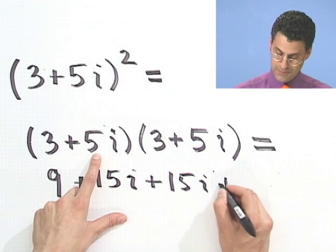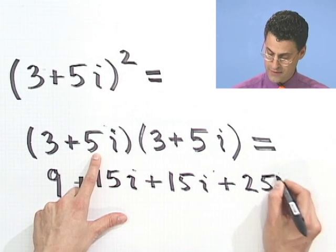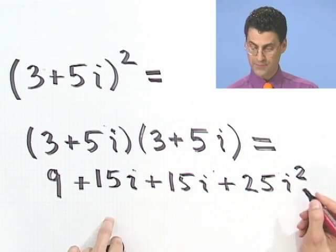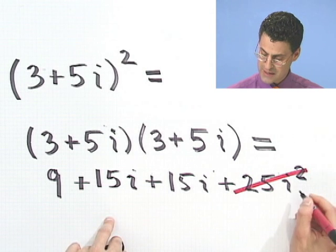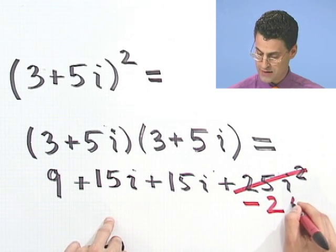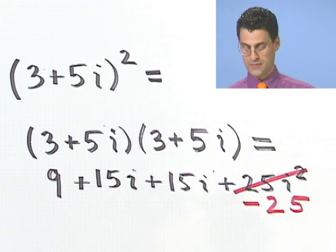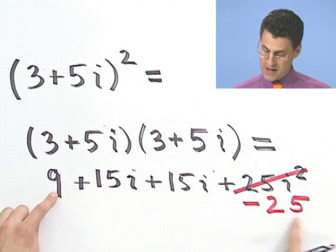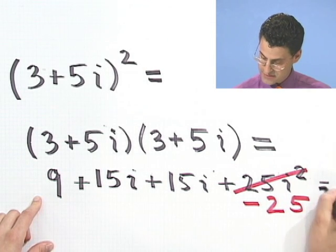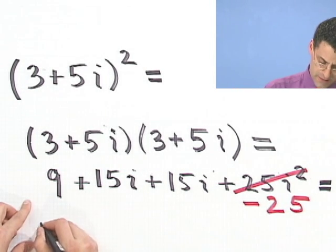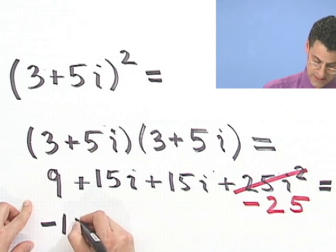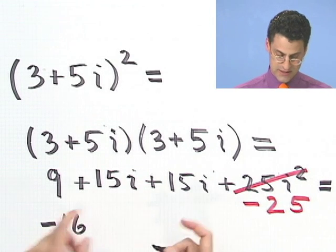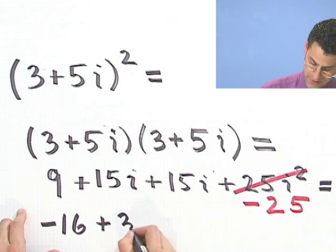The outside terms are another 15i. And the last times the last is a plus 25i squared. But now I remember that i squared is just the same thing as negative 1. So in fact, this whole thing is the same thing as minus 25. Just change the sign. So my real parts are over here. My imaginary parts are over here. If I combine those together. Let's see, 9 minus 25. Oh boy, these are always the hard ones, aren't they? This is going to be a minus something. It'll be like a minus 16, he says hopefully.